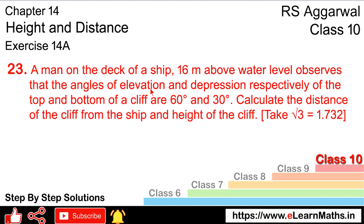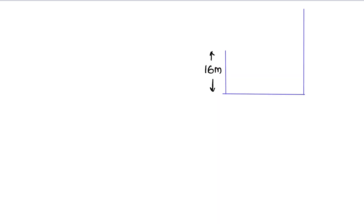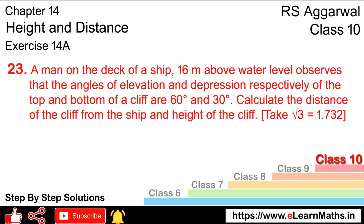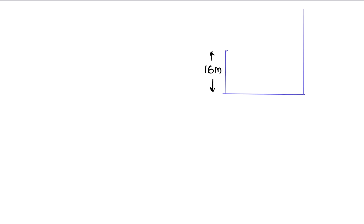This is the height of the cliff above the water level. The angle of elevation to the top of the cliff is 60 degrees, and the angle of depression to the bottom is 30 degrees.